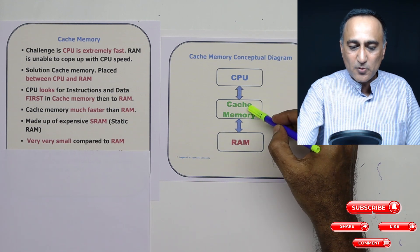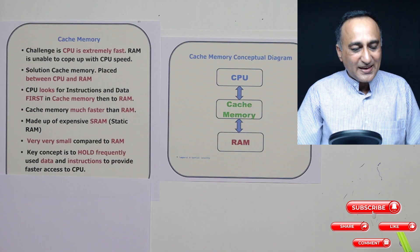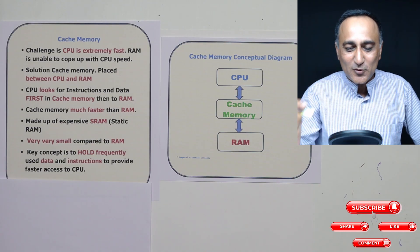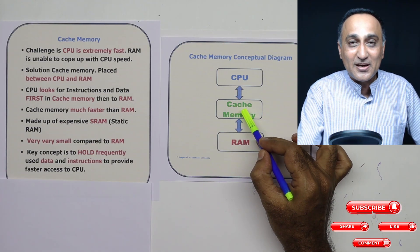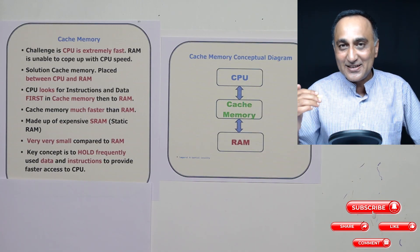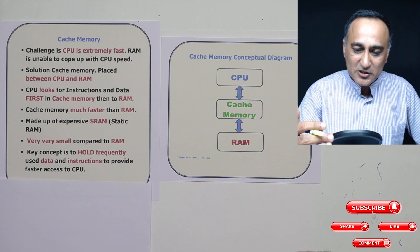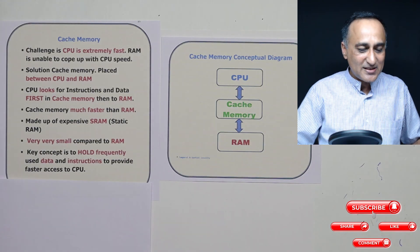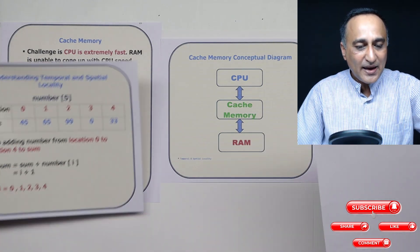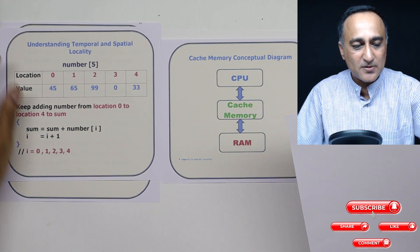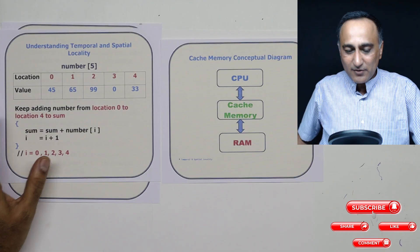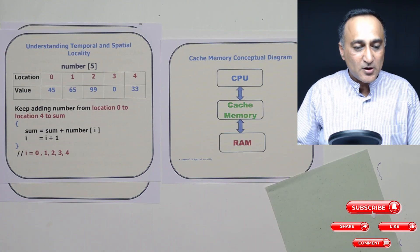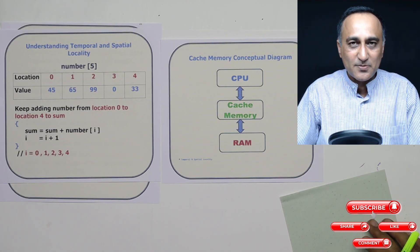It is made up of expensive static RAM. I have already told you this is very small as compared to this. Now the key idea behind the working of the cache memory is if you hold the most frequently used data and instructions in high speed memory, automatically it will be able to supply that data and instructions to the CPU at a very high speed, and thereby the CPU is also going to run at the maximum possible speed. The best way to understand the cache memory working is through a very simple example. Cache memory basically works on two concepts. The keywords, irrespective of what level you study in cache memory, it works on the concept of temporal and spatial locality. So I will try to explain these concepts through a very simple example.